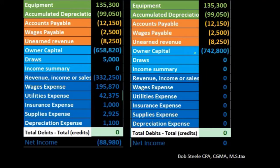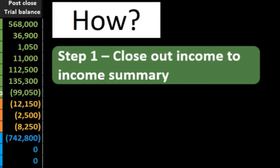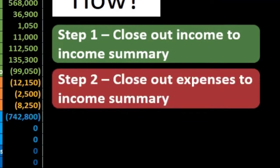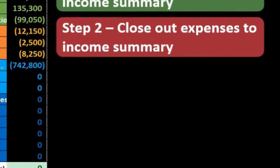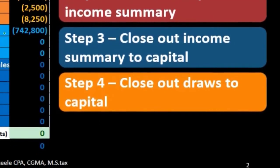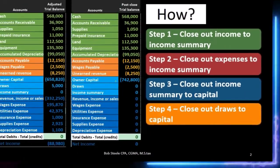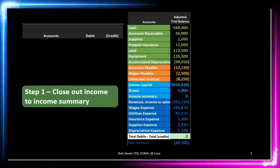We talked about how we were going to do that. We're going to do a four-step process: close out the income to the income summary, then close out the expenses to the income summary, then close out the entire income summary to the capital account, and finally close out draws to the capital account. We're going to start off with step one of those four steps.